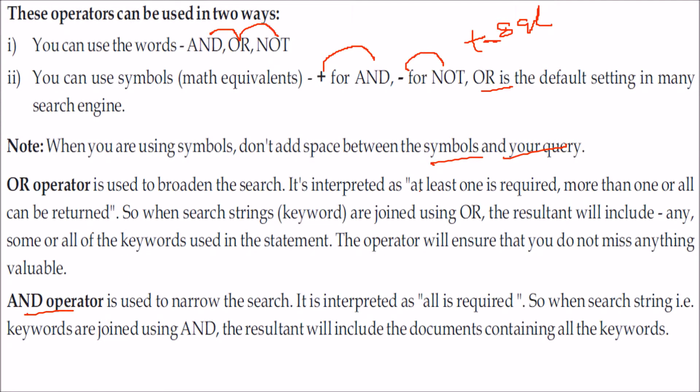OR operator is interpreted in your Google search text box as at least one is required, more than one or all can be returned. So when search strings or keywords are joined with OR, the result will include any, some, or all of the keywords used in that statement. The operator will ensure that you don't miss anything valuable.